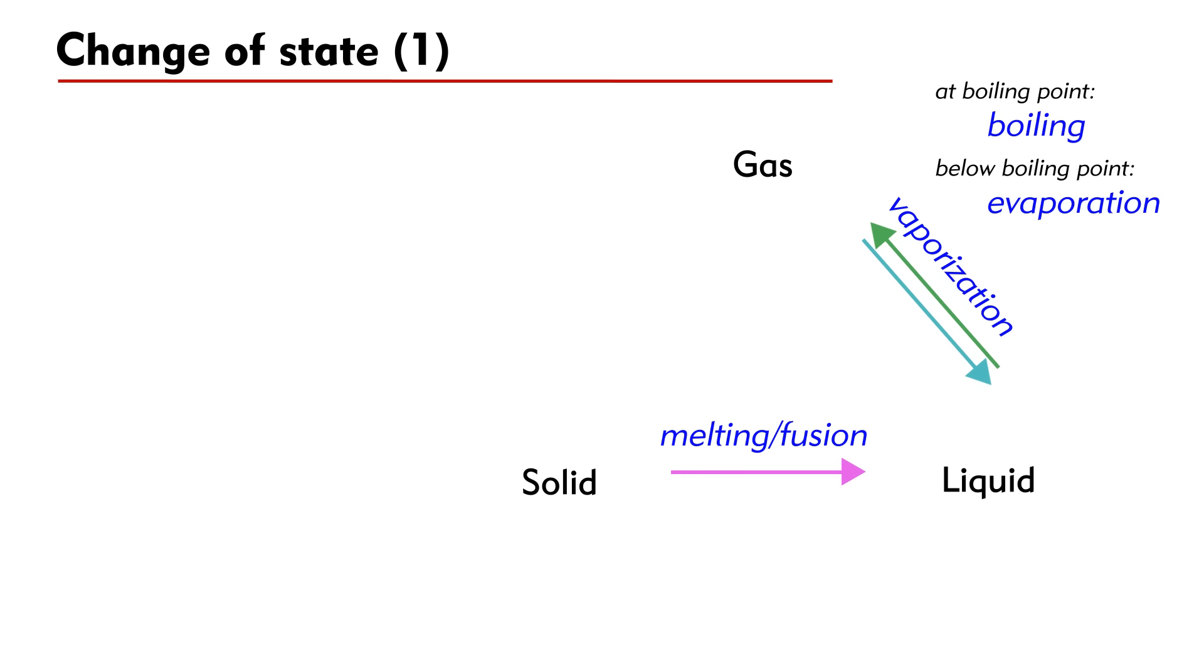A change from gas to liquid is called condensation. A change from liquid to solid is called freezing or solidification. Do not use the term liquidification to describe melting or condensation because it is confusing.